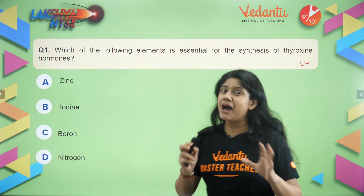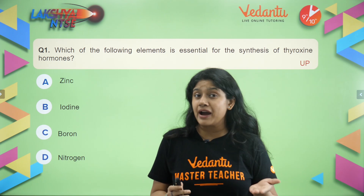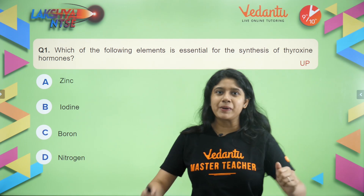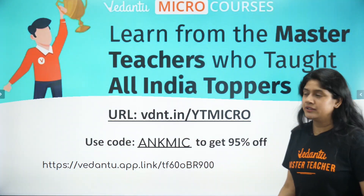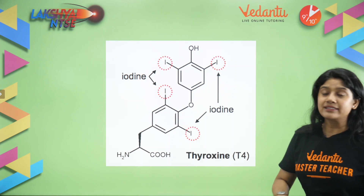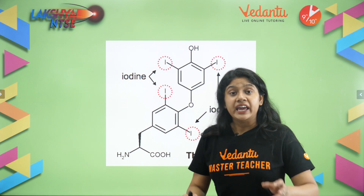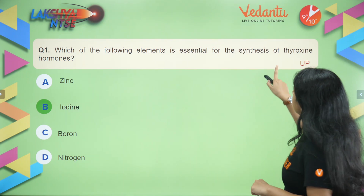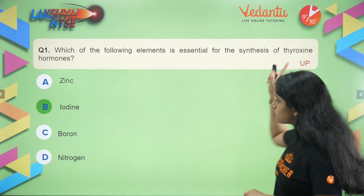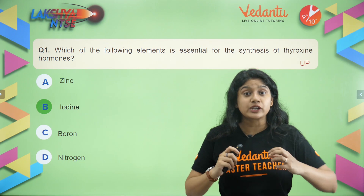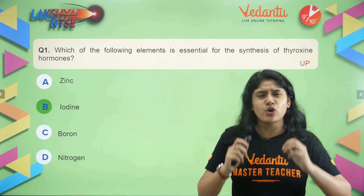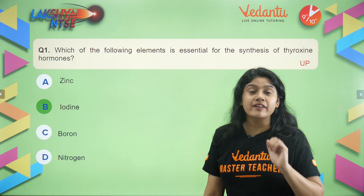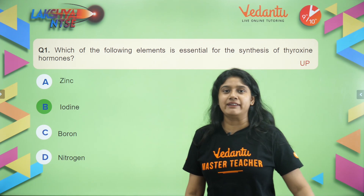If this hormone is imbalanced it usually causes the disease goiter — that's the biggest hint! Yes, iodine is the right answer. In the absence of iodine, goiter will occur. Thyroxine hormone is essential for the body and it is produced only with the help of iodine. Please make a note of this important question.